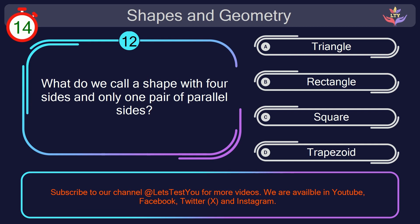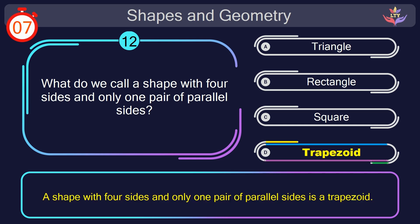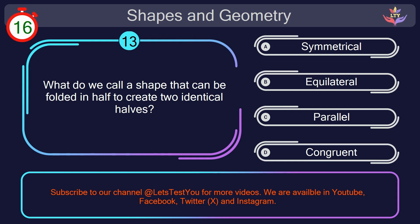Question number 12. What do we call a shape with 4 sides and only 1 pair of parallel sides? Your countdown started. 1, here we go. The correct answer is option D. Trapezoid. A shape with 4 sides and only 1 pair of parallel sides is a trapezoid.